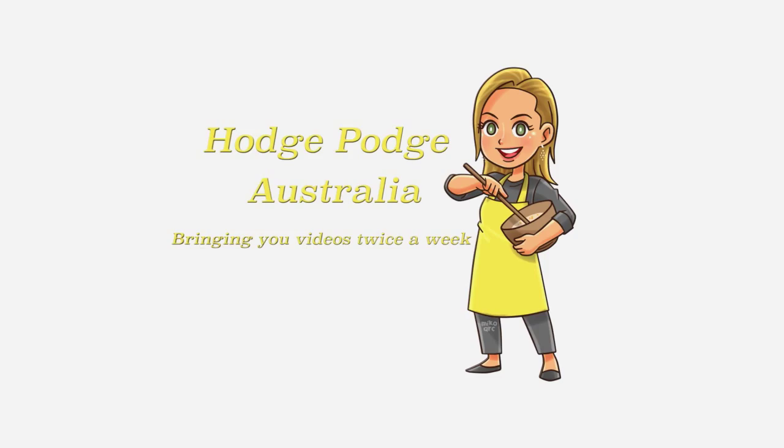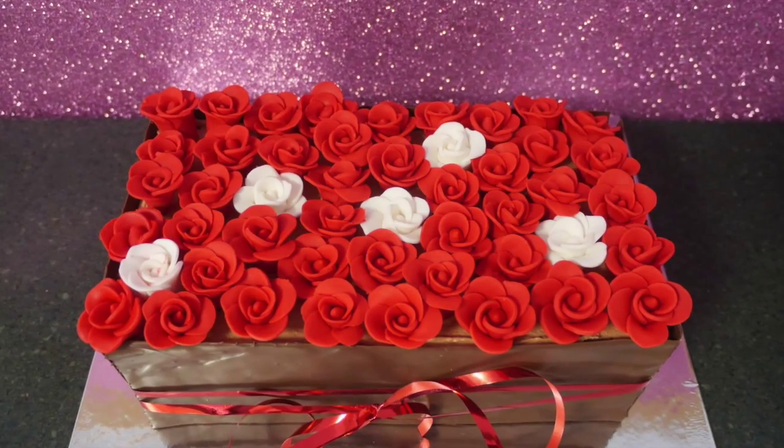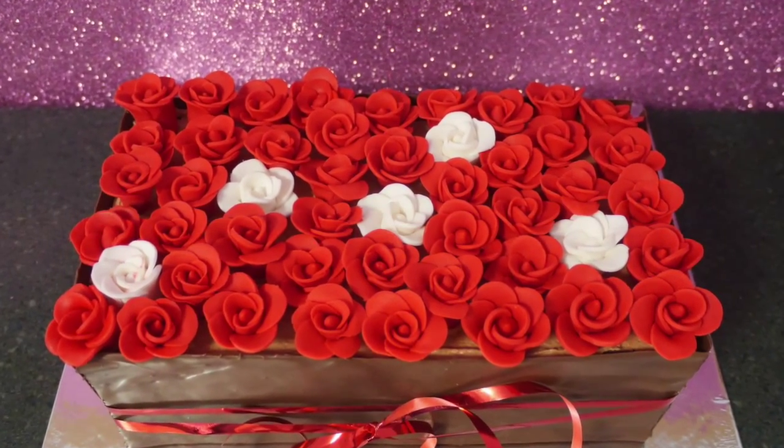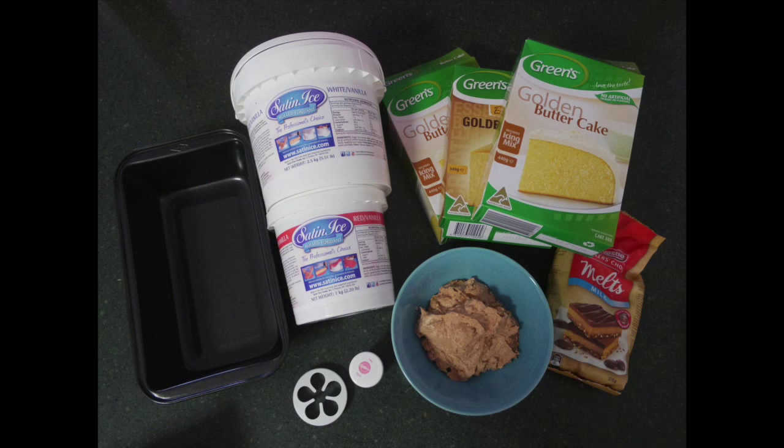Welcome to Hodgepodge Australia. Today we're making this romantically sweet box of roses cake for Valentine's Day. You will need an extra large loaf pan, white and red fondant, three cake batters, some buttercream, some chocolate, a rose cutter, and some pink tinting.